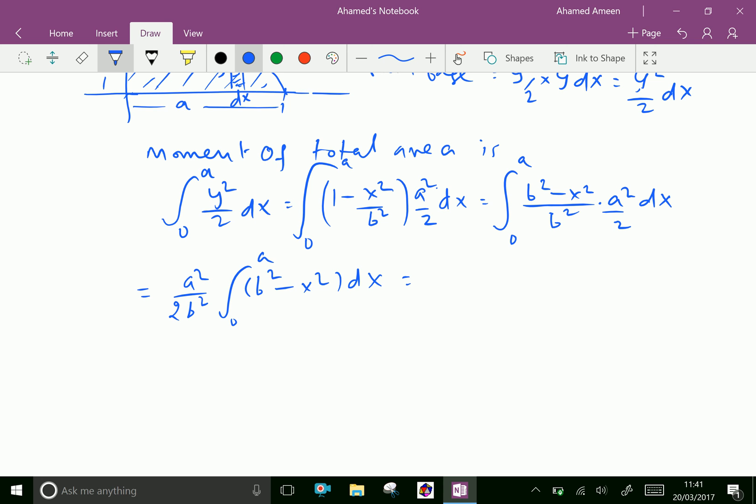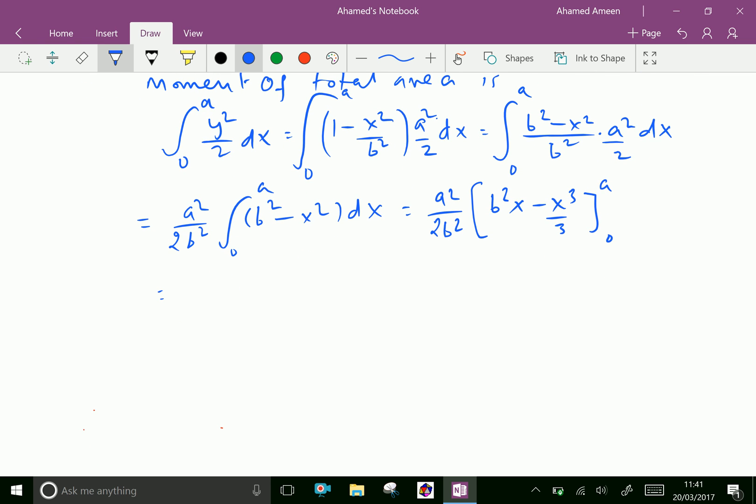By integrating with respect to x, we get a squared over 2 b squared times [b squared x minus x cubed over 3] from 0 to a. Applying the limit a, that is substituting x equals a, we get a squared over 2 b squared times (b squared a minus a cubed over 3).